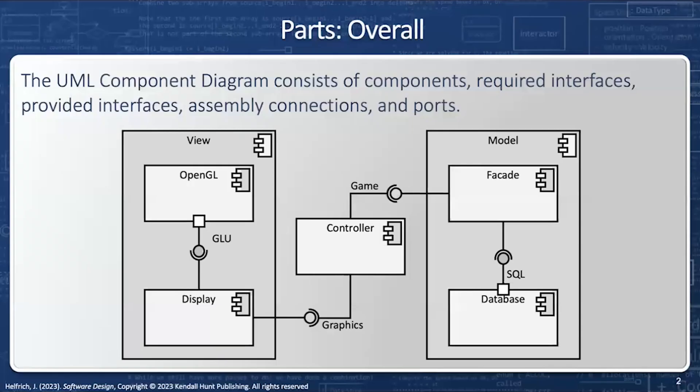The UML component diagram consists of components, required interfaces, provided interfaces, assembly connections, and ports. Let's look at each of these in turn.